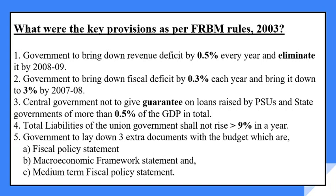Total liabilities of the union government shall not rise by more than 9% in a year. Additionally, the FRBM rules required the government to present 3 extra documents along with the budget before the Speaker: a Fiscal Policy Statement, a Macro Economic Framework Statement for the long-term outlook, and a Medium Term Fiscal Policy Statement outlining medium-term expenditure plans.